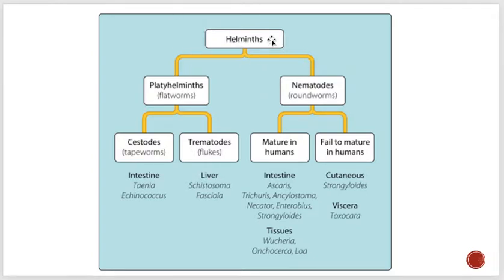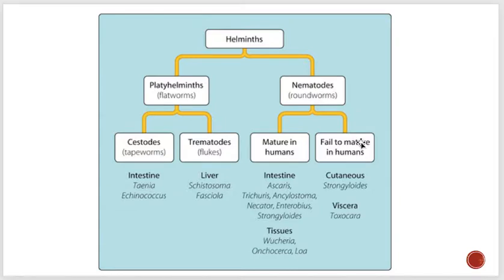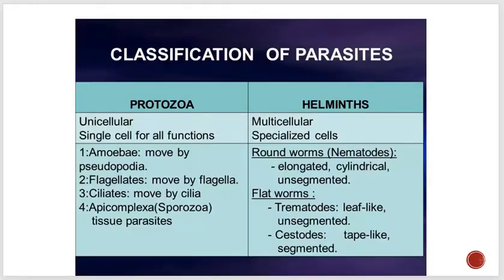Here you can see the classification: helminths have two groups — nematodes or roundworms, and platyhelminths or flatworms. Flatworms are further classified into cestodes and trematodes, that is tapeworms and flukeworms. Nematodes have two subclasses: one that matures in humans — intestinal and tissue forms — and one that fails to mature in humans, like cutaneous and visceral forms.